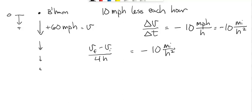Okay, and that means that the final is equal to, I'm going to multiply both sides by four times four hours, and I'm going to add the initial speed, which is 60 miles per hour.